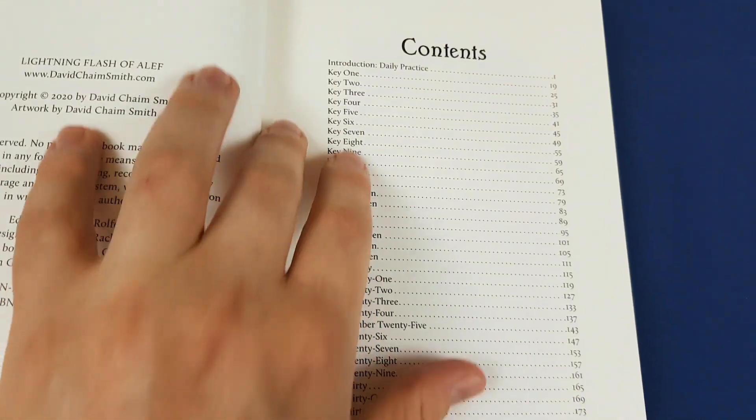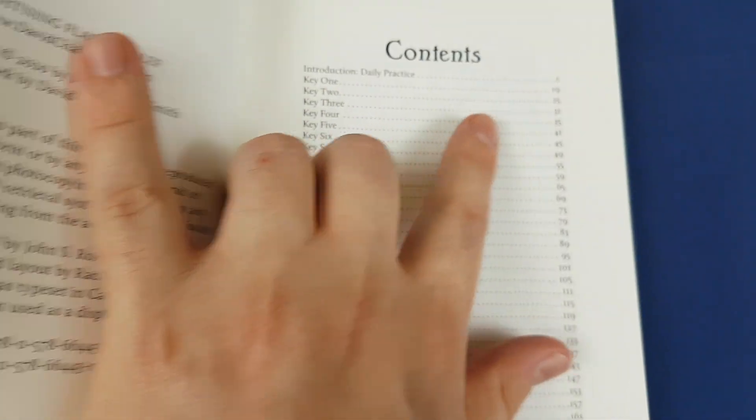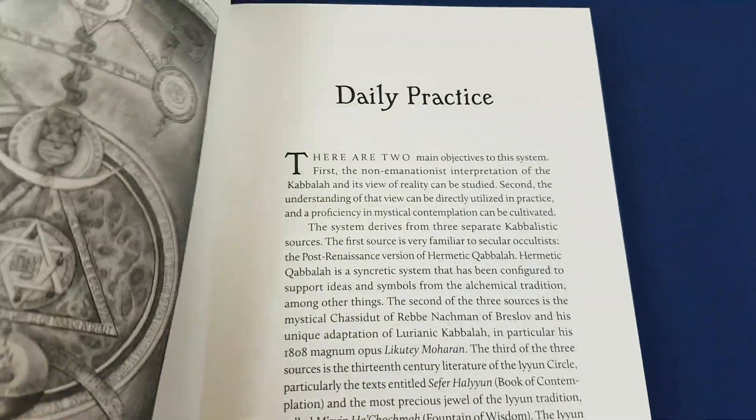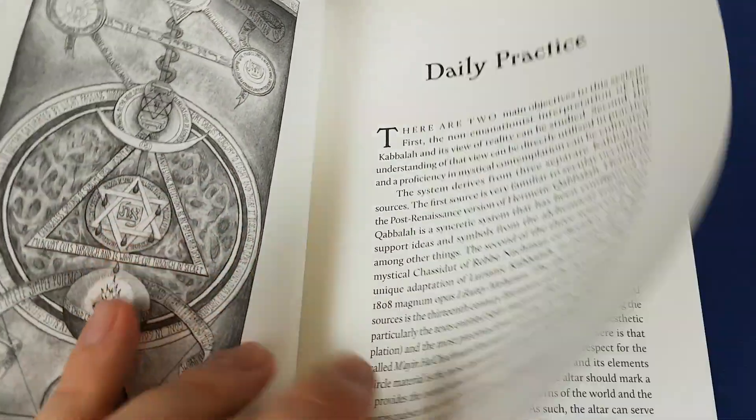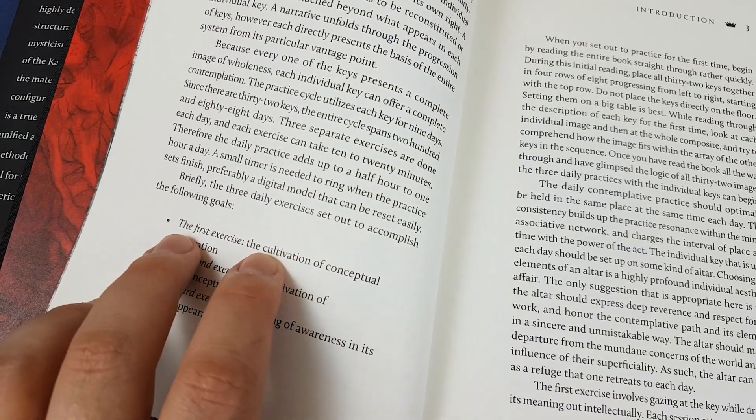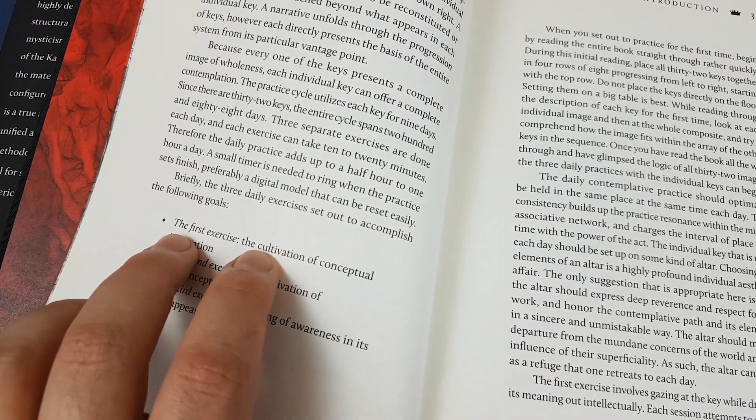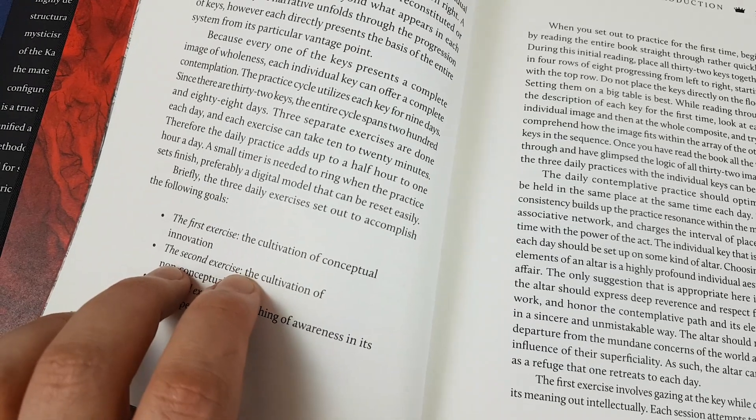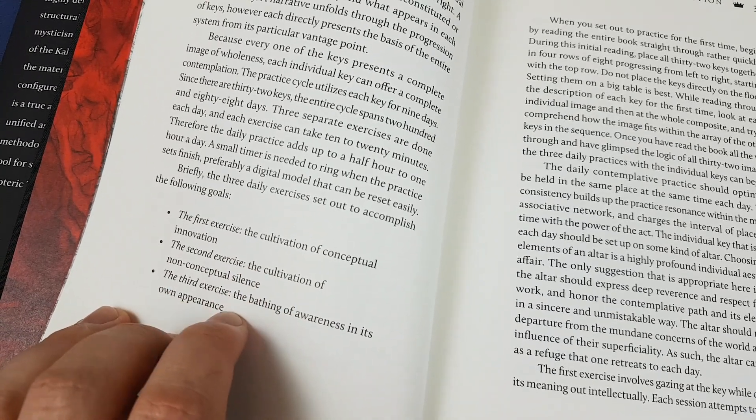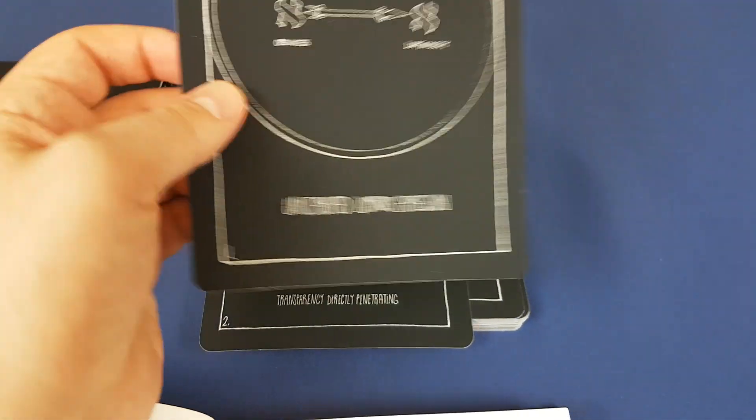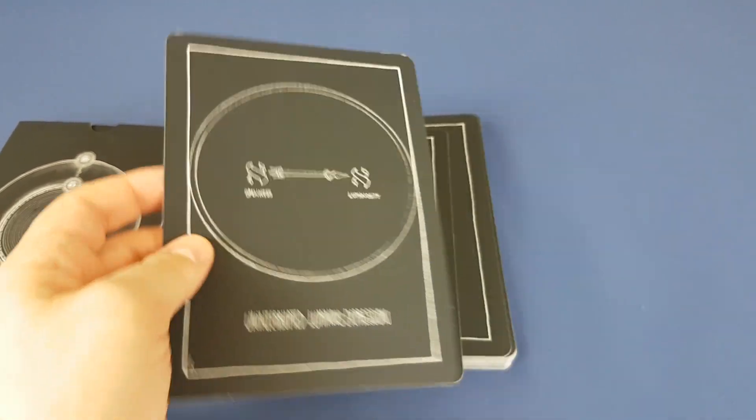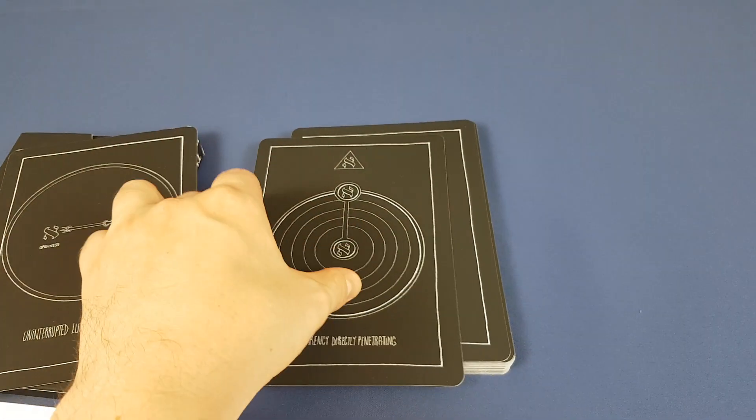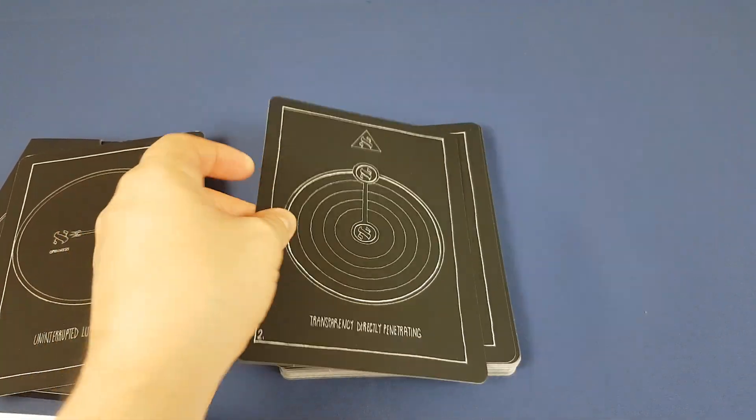There is a short introduction, about 18 pages or so, talking about how to practice. The practice takes part in three phases. There's a first exercise that lasts 10 to 20 minutes, a second exercise, same thing, 10 to 20 minutes, and a third exercise, 10 to 20 minutes. The first exercise, you take one card and you work with this one card for nine days in a row. And then after nine days, you'll be using the next card.